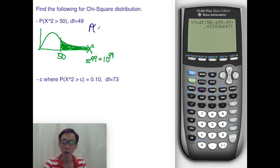So P(χ² > 50) equals 0.4334. Now let's try the reverse problem.